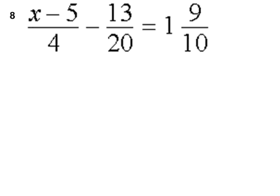And finally, your last question, which is your harder question, is a quarter of x minus five, or x minus five divided by four, minus thirteen twentieths is equal to one and nine tenths. Remember when you do this, there's two ways you can solve it. You can first get rid of the constant, or if you want, you can multiply both sides by a common multiple of the denominators.